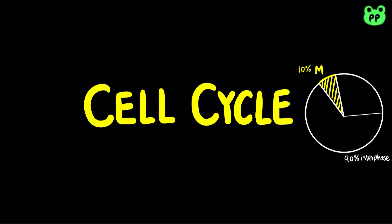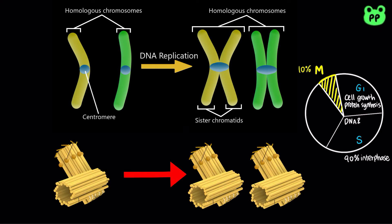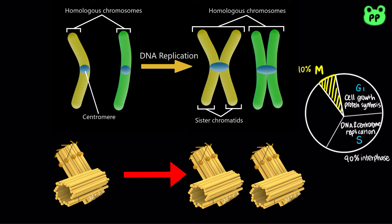During G1 phase, also called the first gap phase, the cell grows larger and synthesizes more proteins. During S phase, the cell replicates its DNA while also replicating the centrosome, which is a type of microtubule organizing structure that helps separate DNA during M phase.